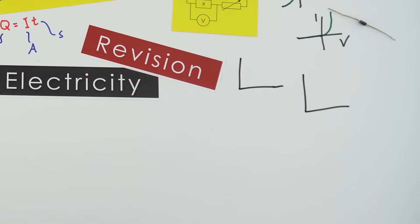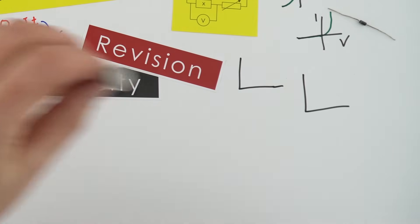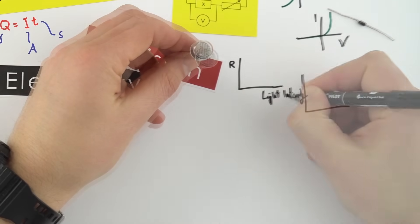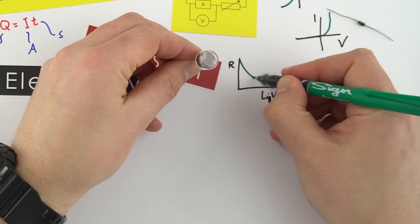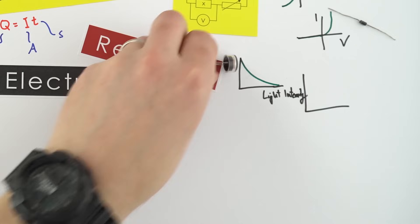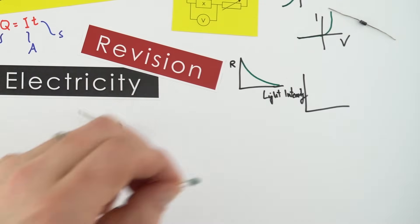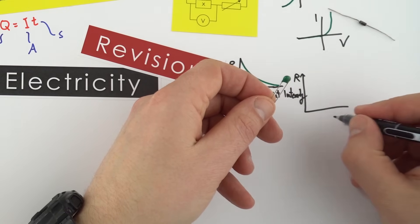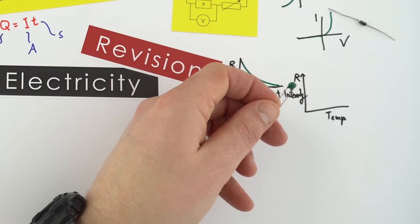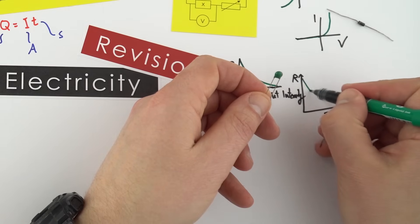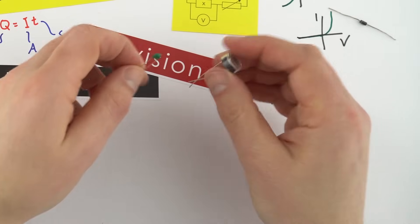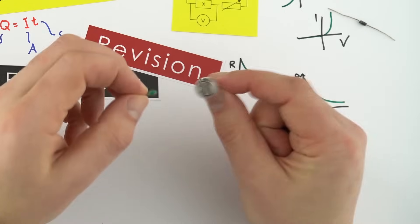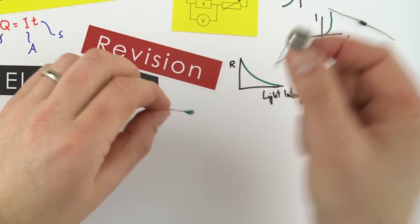There are two other components to investigate. A light dependent resistor (LDR): when we increase the light intensity, the resistance decreases. Similarly, a thermistor is a thermal resistor — as we heat it up, the resistance goes down. These two components can be used in all sorts of sensing applications: if it gets too hot or too dark, they can be used to turn on other parts of an electrical circuit.